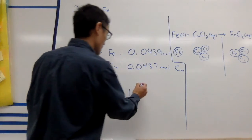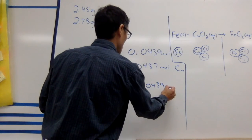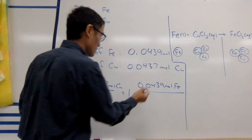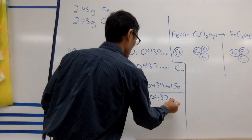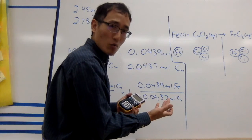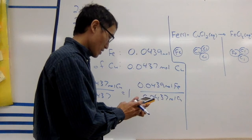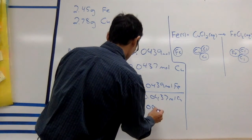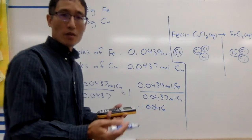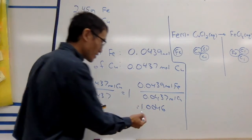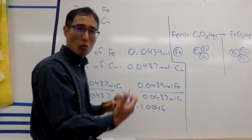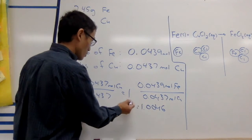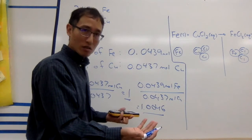I can do the same thing for iron: take 0.0439 moles of iron and divide it by that same number — 0.0437 — to compare it to the copper. Dividing these out gives me 1.0046. The rule of thumb is if this number is within less than 0.1 of a whole number, then it's close enough. So 1.0046 is close enough to 1.